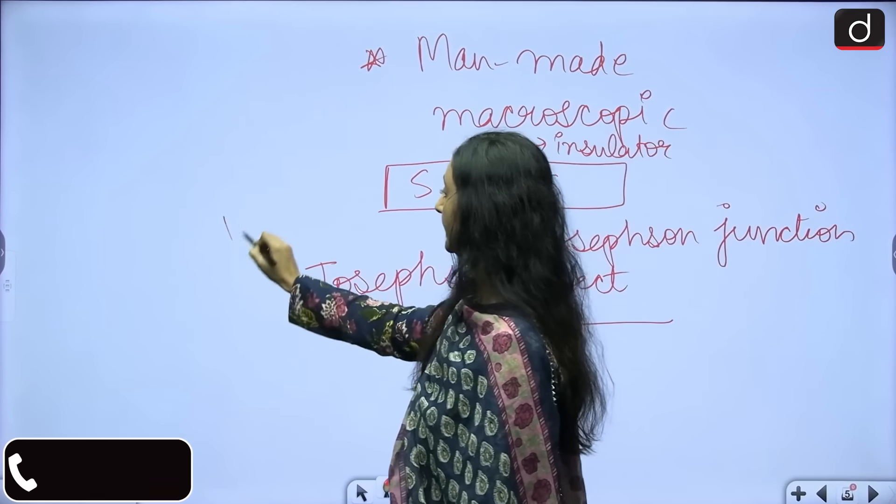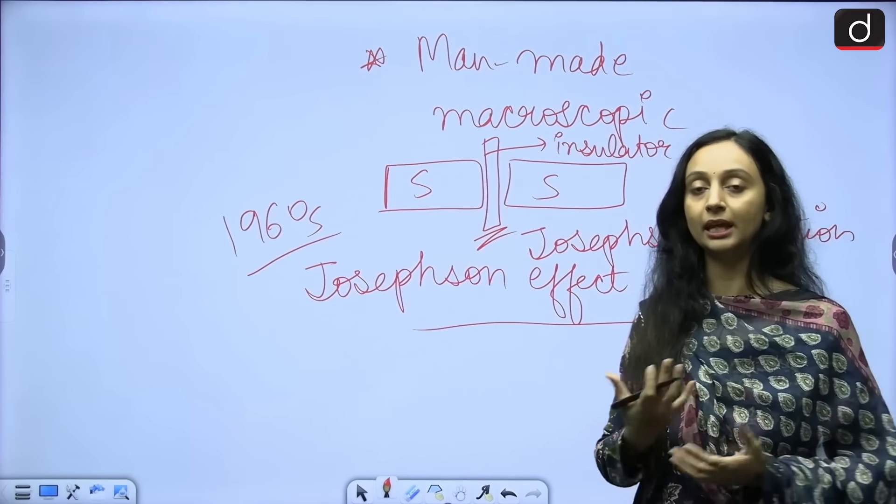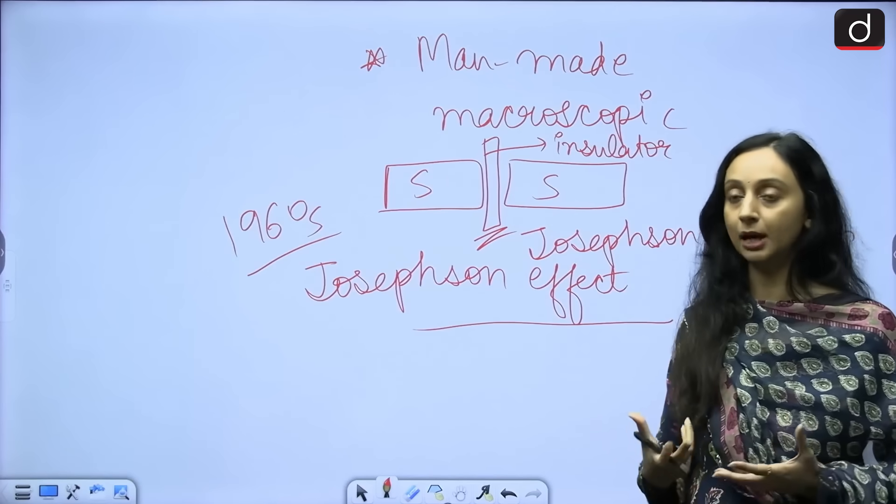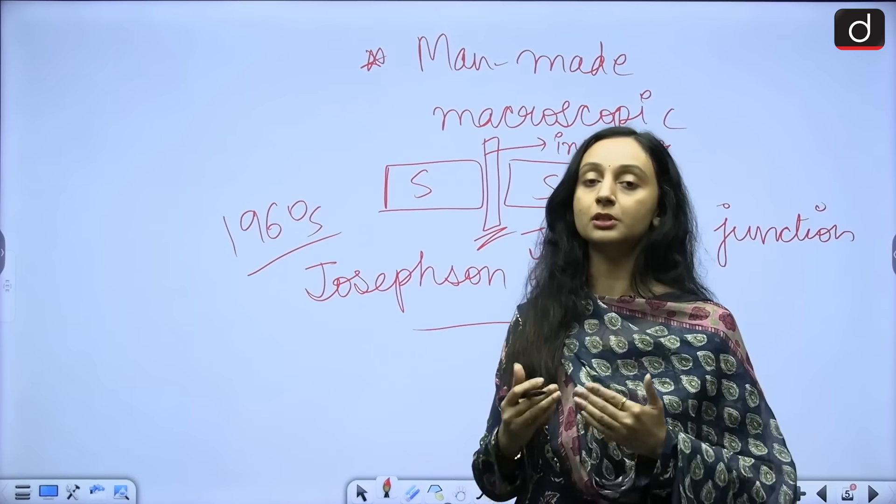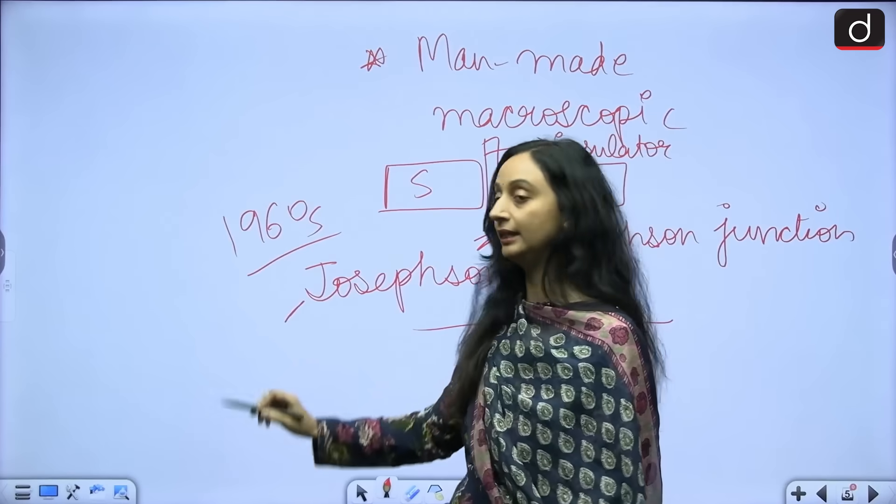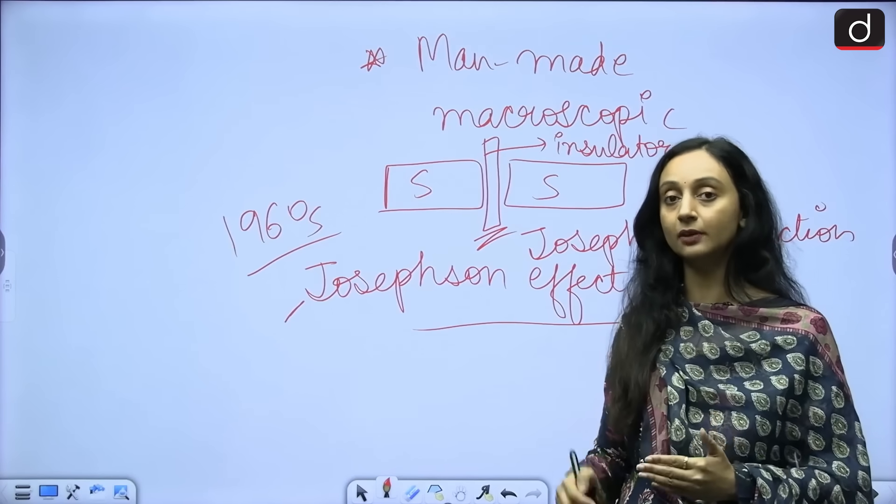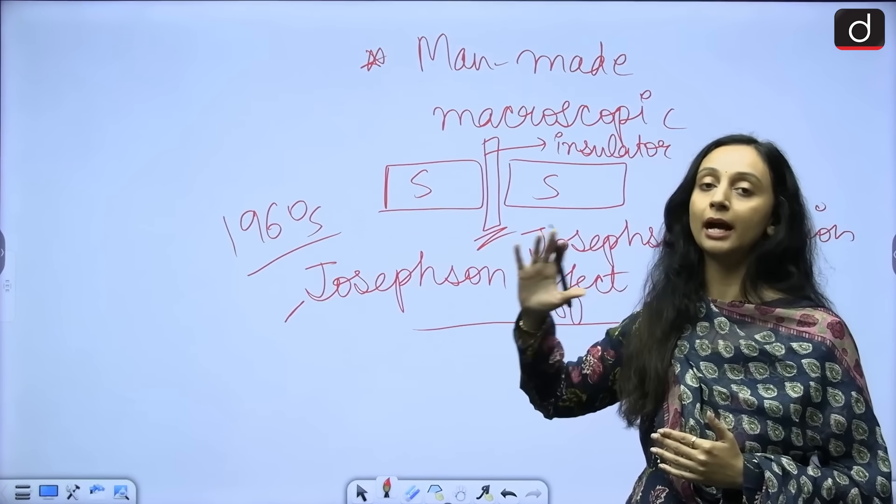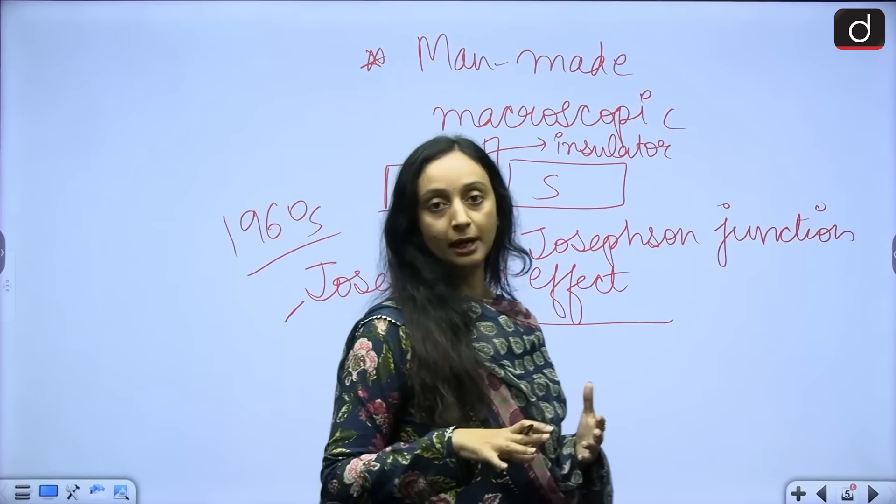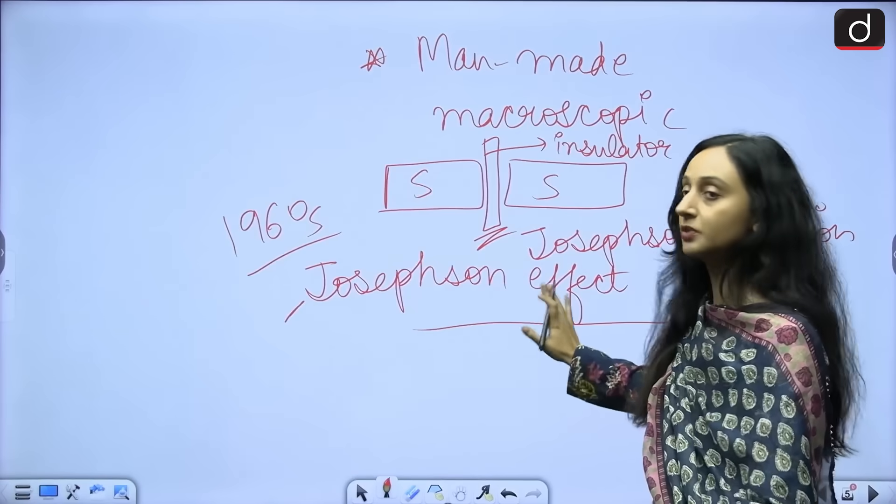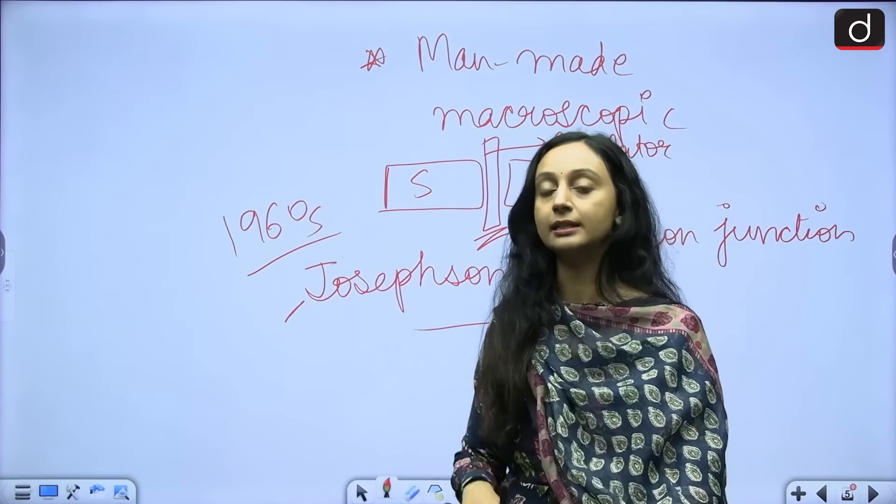So this was discovered in 1960s where basically this complete circuit, these two superconductors, they basically behave as one complete circuit, one big quantum particle. So these superconductors and the insulator, they behave like one particle and electricity can flow through it because of the principles of quantum mechanics. And this was observed in 1960s at a microscopic level, at a quantum level. Now what happened? What did these new scientists discover? They replicated the same thing at a macroscopic level. So they replicated the Josephson's effect at a macroscopic level, at a man-made macroscopic level. So this electric circuit could also show us the Josephson effect because the complete circuit started behaving like one big quantum particle. So this was their discovery.